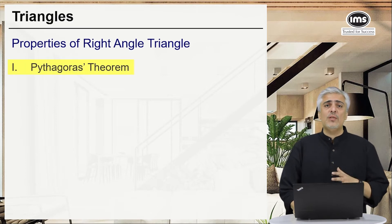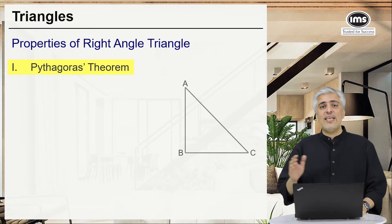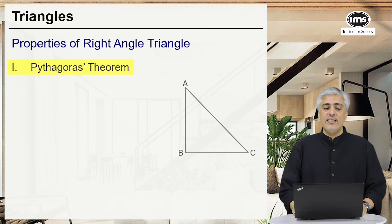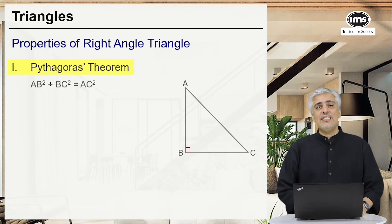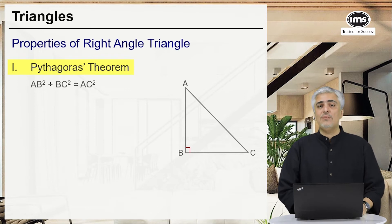Let's see the first one. The first one is the most common one, the Pythagoras theorem. So if I look at a triangle ABC where angle B is 90, then the hypotenuse is AC, the side opposite to 90 degrees. The Pythagoras theorem states that AC square will be equal to AB square plus BC square. That's the basic Pythagoras theorem.